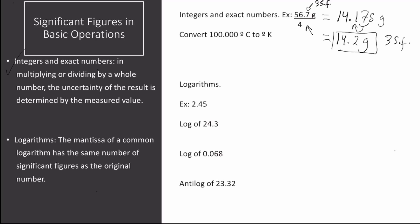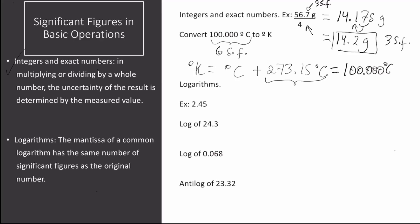The next example is to convert 100.000 degrees Celsius to degrees Kelvin. This number is a measured number that has six significant figures. The formula to convert Celsius to Kelvin is: degrees Kelvin equals degrees Celsius plus 273.15. This constant is not taken into account in determining significant figures. So we add 100.000 plus 273.15 and get 373.150 degrees Kelvin — the zero is added at the end to maintain six significant figures, as desired.